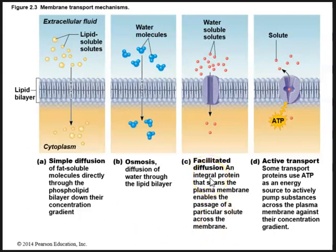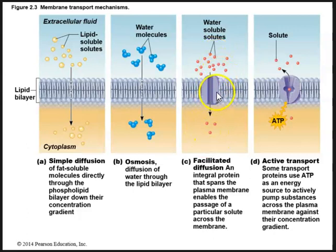Next we have facilitated diffusion, which is a type of membrane transport where molecules move down their concentration gradient but use an integral protein for help. Integral proteins are embedded within the phospholipid bilayer, and facilitated diffusion uses them to move molecules from high to low concentration. Facilitated basically means it requires help — these integral proteins span the plasma membrane and help with the passage of particular solutes.